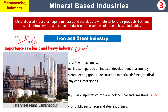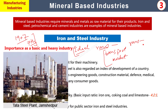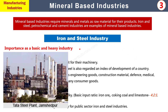Iron and Steel industry کے ideal location کے لیے ضروری ہے کہ raw material کے نزدیک ہی plant لگایا جائے۔ Electricity کی requirement ہے، پانی کی requirement ہے، اچھا transport network چاہیے، market accessible ہونی چاہیے اور government کا support بھی ہونا چاہیے۔ Raw material سے جتنی زیادہ دوری ہوگی اتنی transportation cost بڑھے گی۔ Jamshedpur اور Odisha میں Tata and RN Steel کے plants ہیں۔